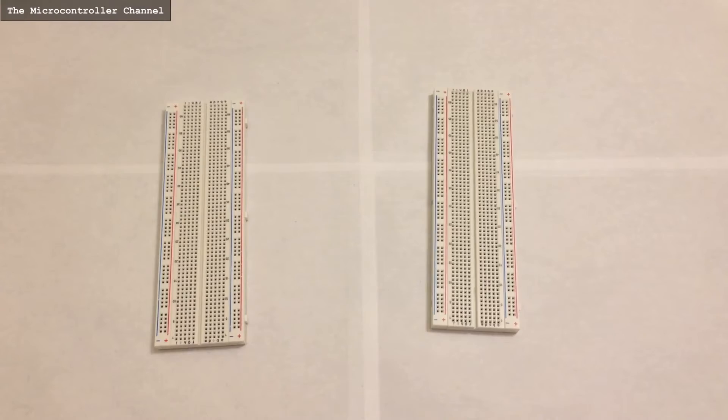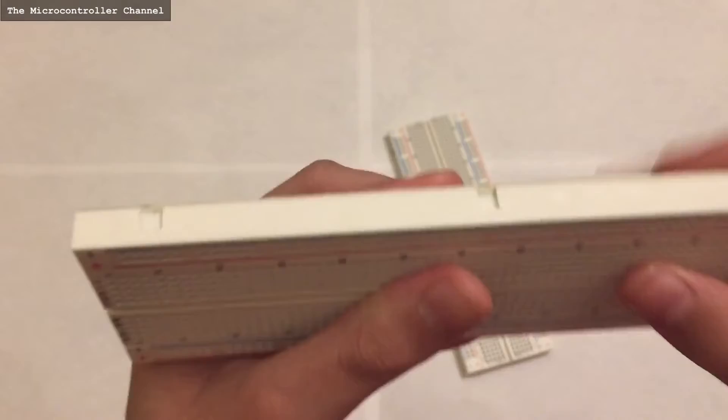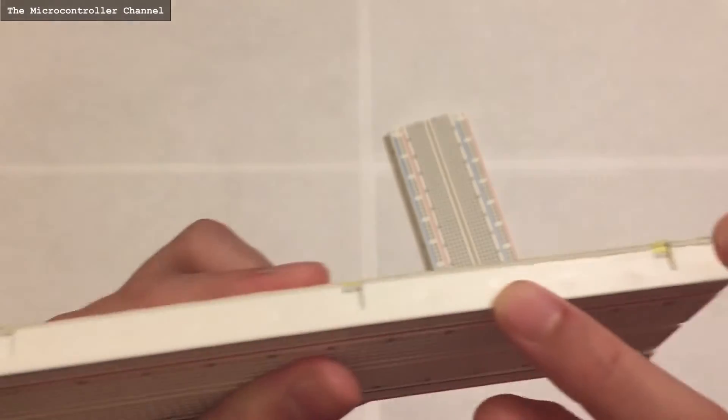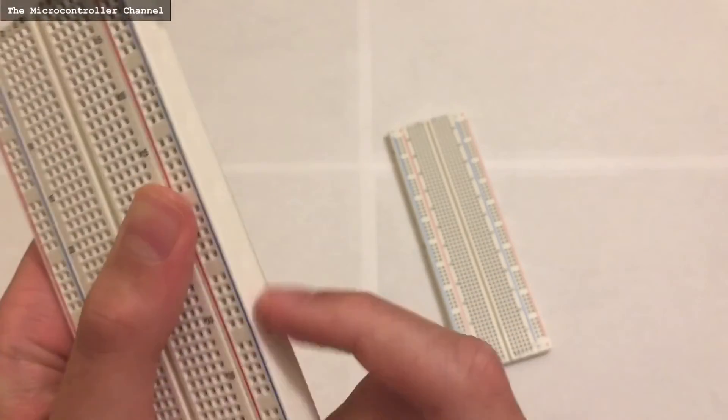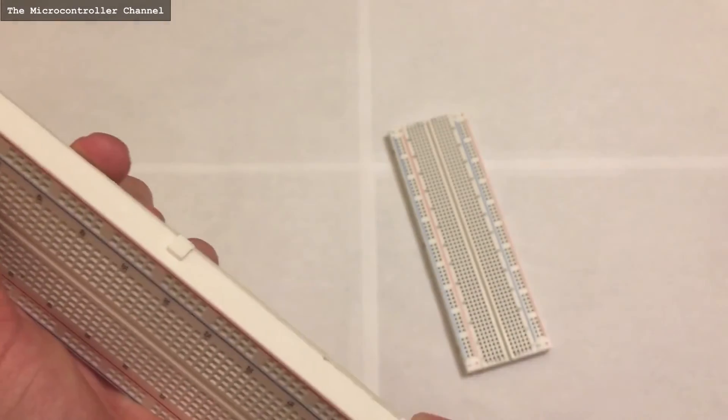You can put any amount of breadboards together because they always have a side that has square ridges that go in and a side that has square ridges that go out.